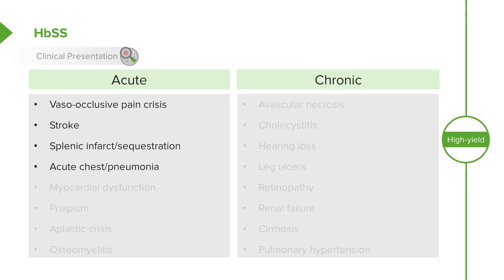Acute chest syndrome is a significant problem. This is when cells get sickled inside the lungs. It can cause a fever and it can be clinically very challenging to distinguish acute chest from pneumonia. So they often end up on antibiotics as well.